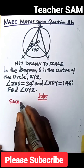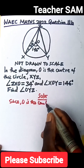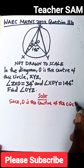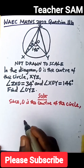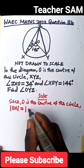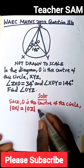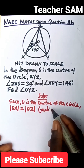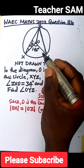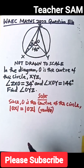Since O is the center of the circle, we can say line OX is equal to line OZ because they are both radii. The radii of a circle are equal according to the properties of a circle.